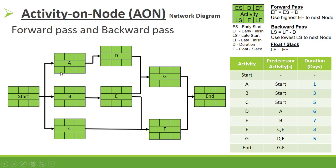Creating the network diagram: activities A, B, and C are connected to Start. Activity A is connected to D and to E. Activity B is connected to E. Activities C and E are connected to F. Activities D and E are connected to G. Activities G and F are connected to the Finish node.